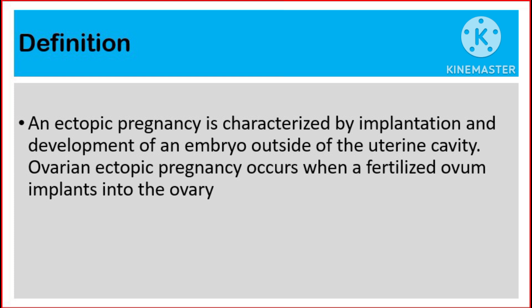Definition. An ectopic pregnancy is characterized by implantation and development of an embryo outside the uterine cavity. Ovarian ectopic pregnancy occurs when a fertilized ovum implants into the ovary.